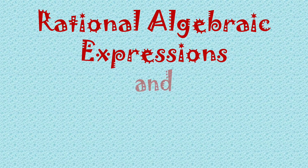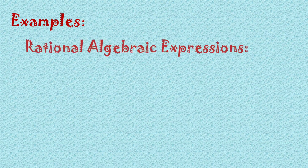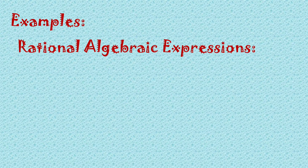So rational algebraic expression and not rational algebraic expression — alam na natin yung pinagkaiba nilang dalawa. Basta pag rational algebraic expression, kailangan ratio sya ng two polynomials at kailangan ang kanyang denominator ay hindi equal sa zero. So kapag hindi sya polynomials, not RAE. So examples tayo — these are examples of rational algebraic expressions: ratio sya ng dalawang polynomials.